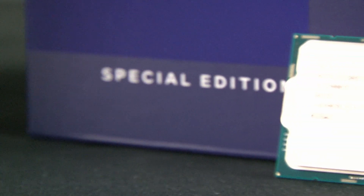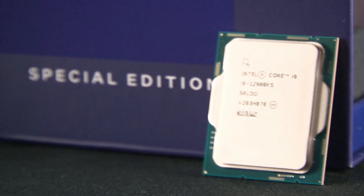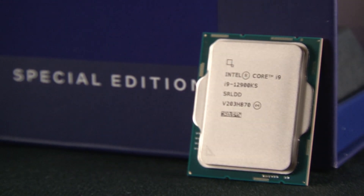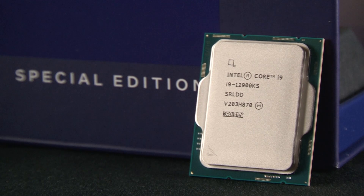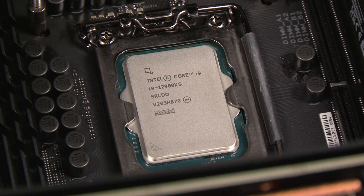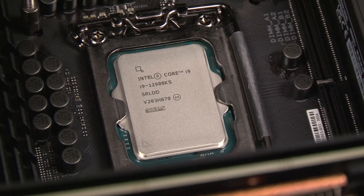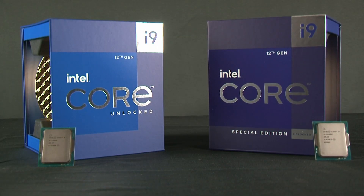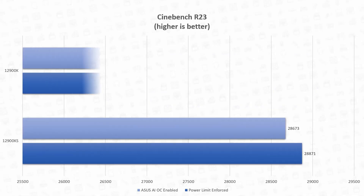Intel has just released the fastest desktop processor yet, the Intel Core i9-12900KS. In this video, we will explain the features of the new CPU, compare it to the regular K model, as well as compare performance benchmarks.